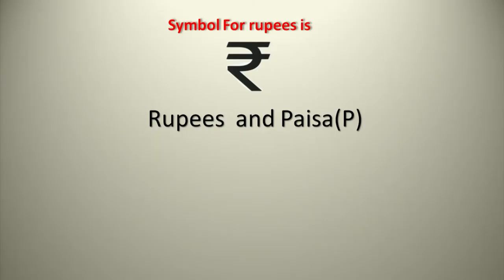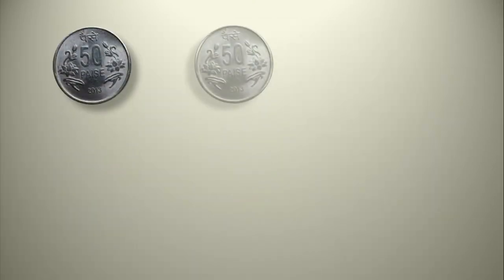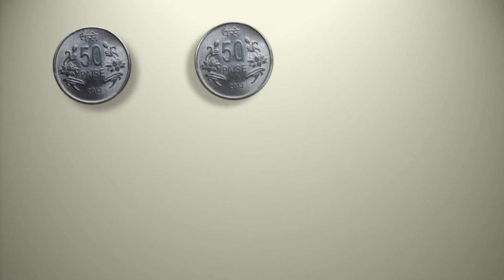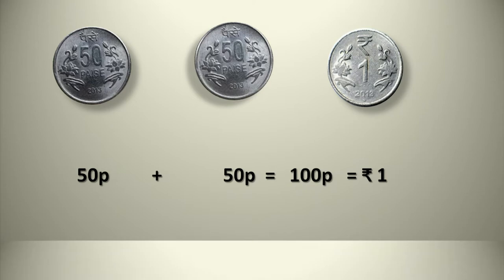Now, as we have seen there are rupees and paisa. What is the combination between rupees and paisa? How much paisa makes 1 rupee? We know that 100 paisa is equal to 1 rupee. If you have 250 paisa — that is 50 plus 50 plus 50 plus 50 plus 50 — 50 plus 50 makes 100 paisa, which is 1 rupee. So in place of 100 paisa, we can write it as 1 rupee.